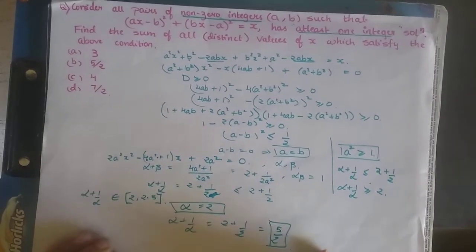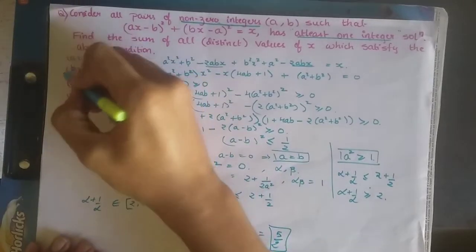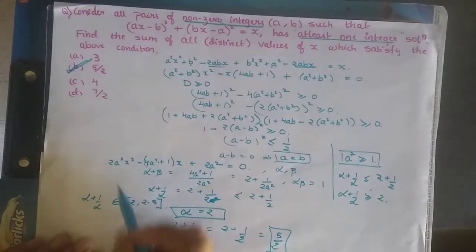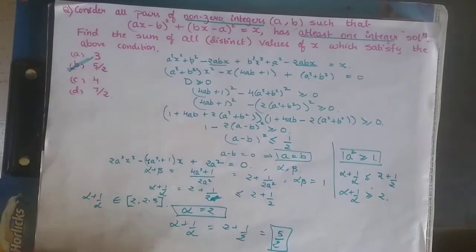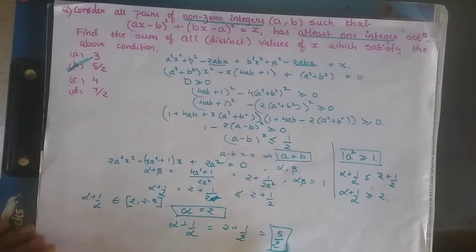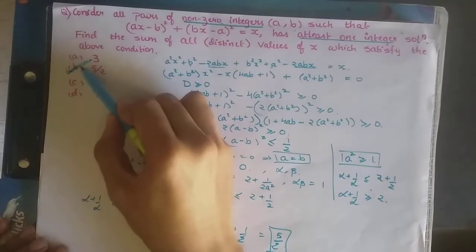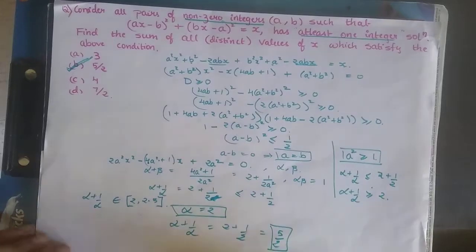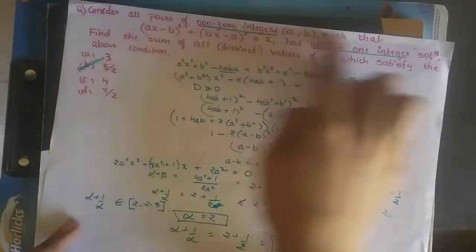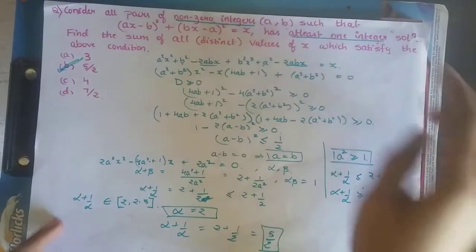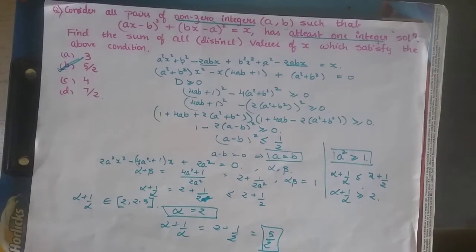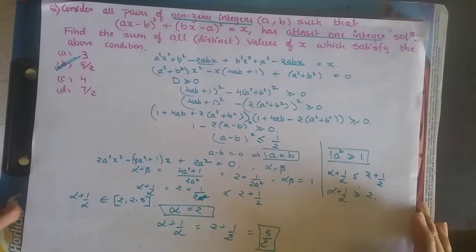Hence the answer is 5/2. It could have been 2 also, but since 2 is not among the options and only 5/2 is given, our answer is 5/2. You see how beautiful this is — there are no specific numbers given in the whole question, but we still deduce a number. That is how we tackle this kind of problem.